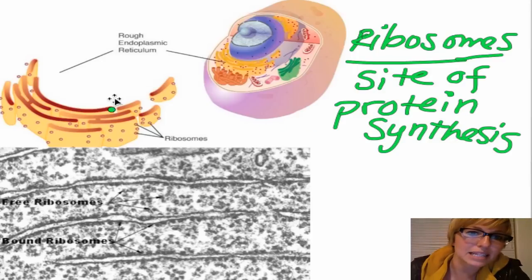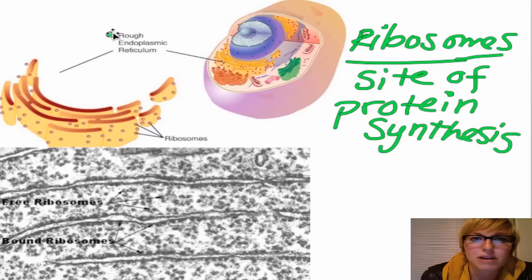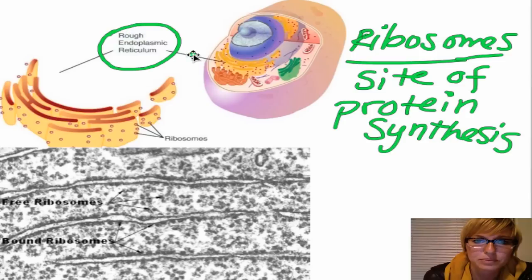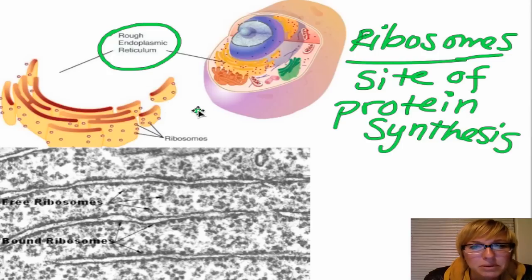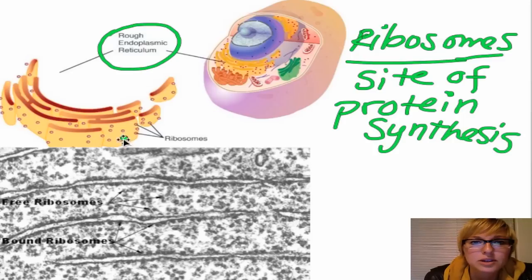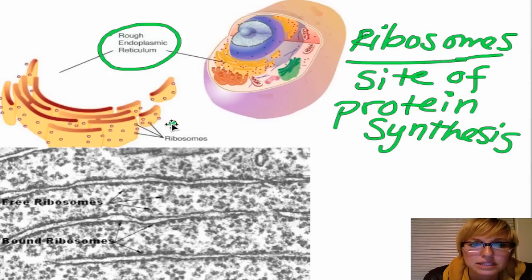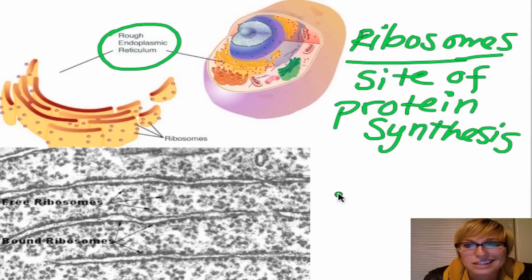Ribosomes can be attached to something called the rough endoplasmic reticulum. Now it's rough because ribosomes are on it — much like sandpaper, where the sand is attached to the paper. So the endoplasmic reticulum is this folded, tubular, squishy thing with a bunch of ribosomes stuck on it. And what you need to know about ribosomes is that they're basically like an RNA and protein globule.